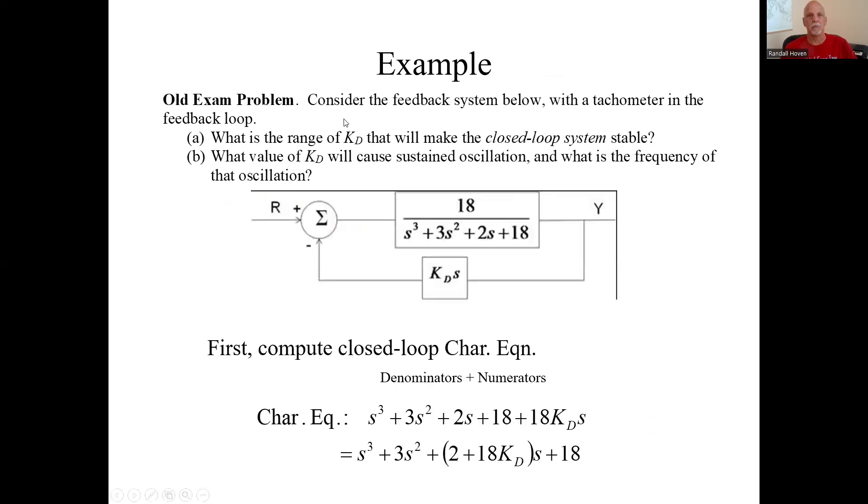Here's another example. The system below, what's the range of K_D that'll make the closed loop system stable? What value of K_D will cause sustained oscillation and what's the frequency of it? Here we're not given the characteristic equation or the transfer function directly. We need the closed loop transfer function. And all we really need is the closed loop characteristic equation.